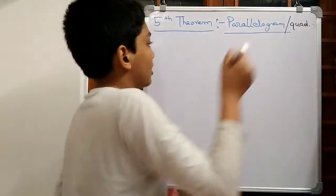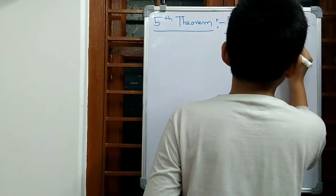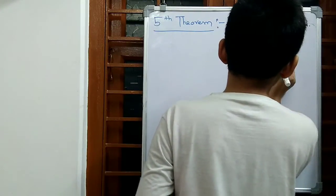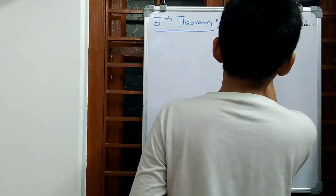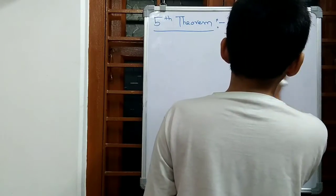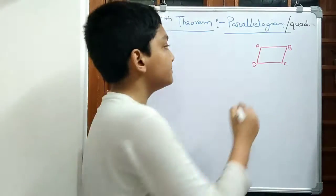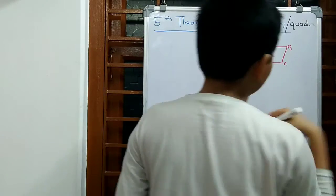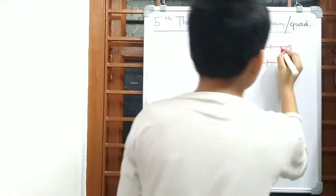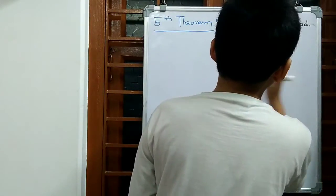So now let's start our proof. What is the diagram given? The diagram is the basic thing in this. In our diagram we are given that ABCD is a quadrilateral, where this side and this side are the same, as well as this side paired to this side.